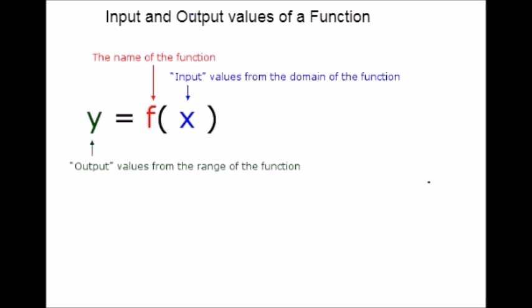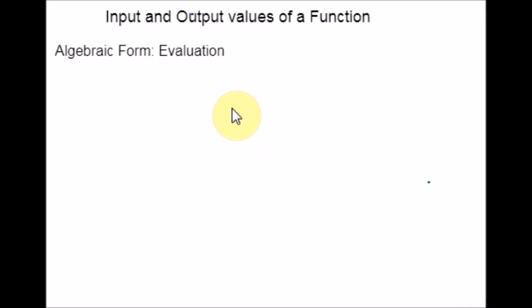Let us see evaluation of functions in algebraic forms first. When we have a function in formula form, it is usually a simple matter to evaluate the function. For example, consider this function f(x) = 5 - 3x². This can be evaluated by squaring the input value and multiplying it by 3 and then subtracting the product from 5. So when a formula is given for a function, we can evaluate by replacing the input value in the formula with the value provided and calculate the result.